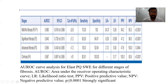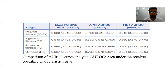This is the AUROC curve analysis for ElastPQ point shear-wave elastography for different stages of fibrosis: mild fibrosis F1, significant fibrosis F2, advanced fibrosis F3, and cirrhosis F4. The p-value is less than 0.0001 for F1, F3, and F4, indicating strong statistical significance. Also shown is a comparison of the AUROC curve analysis for ElastPQ shear-wave elastography, APRI, and FIB4.